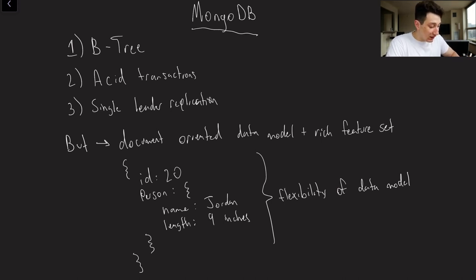Mongo typically uses a B-tree index, it uses ACID transactions if you want them, and typically you would use it with single leader replication and that would just be sharded in order to get better write throughput. All of this stuff is pretty similar to your typical SQL database. A lot of these features are configurable, so you can plug and play them as you want, but this is probably generally how people are using MongoDB.